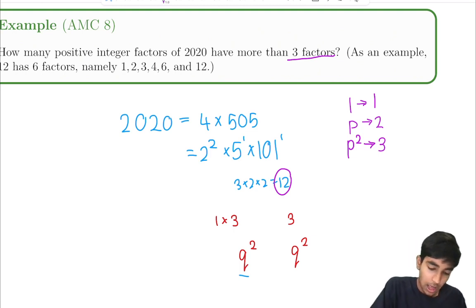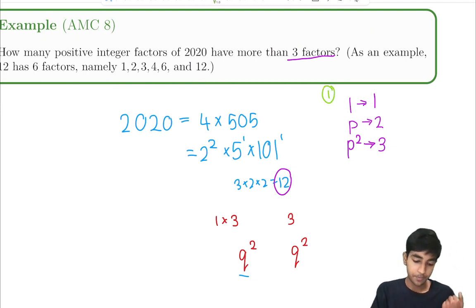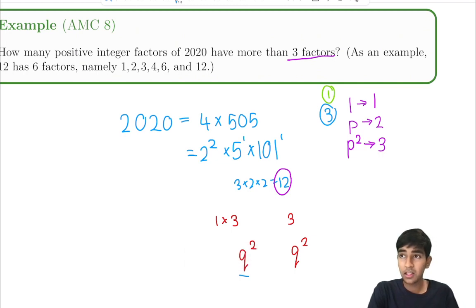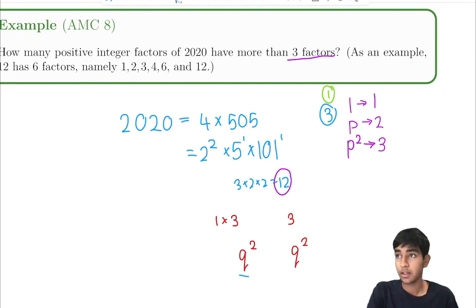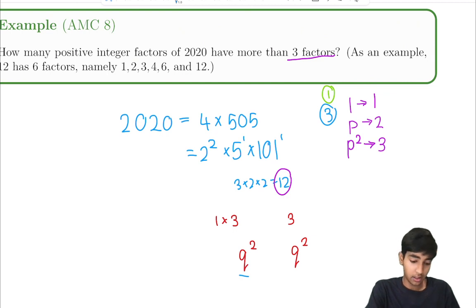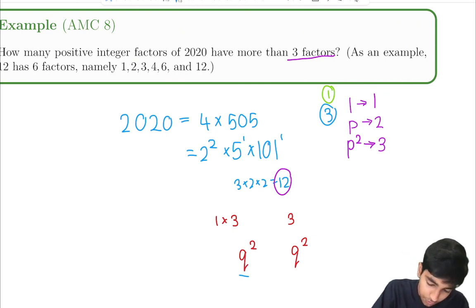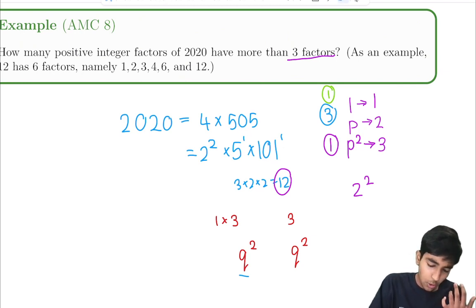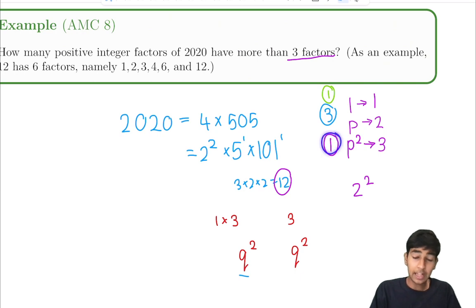Interesting! So now: there's only one number with 1 factor, that's 1. The prime factors of 2020 are 2, 5, and 101, so there are 3 primes. For prime squares, looking at the prime factorization 2 squared times 5 times 101, the only prime whose square is a factor is 2. So there's just one prime square factor, which is 4.